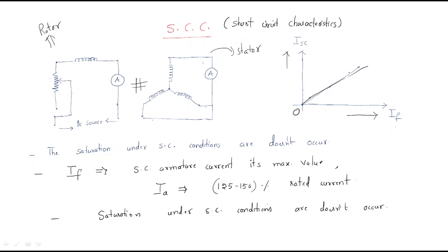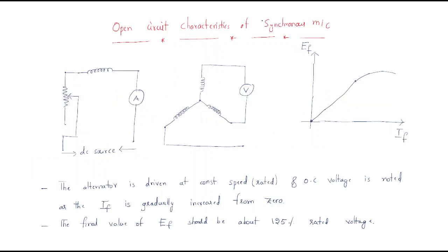Next are the open circuit characteristics of the synchronous machine. Here, all armature terminals are opened and a voltmeter is connected across any two phases or between line terminals. The rotor field is excited with a DC source, and an ammeter is connected in the field circuit.